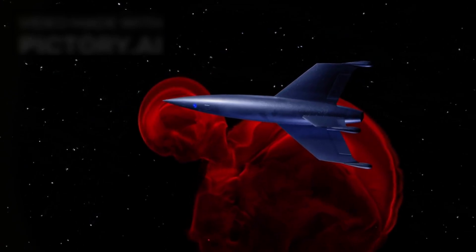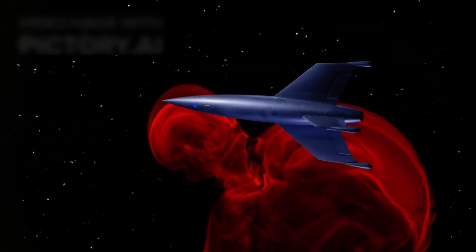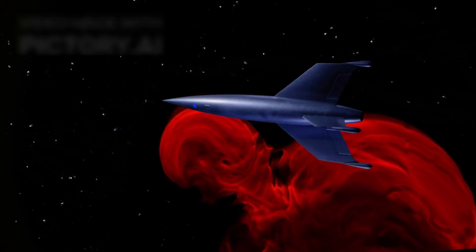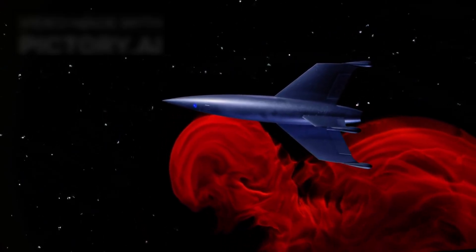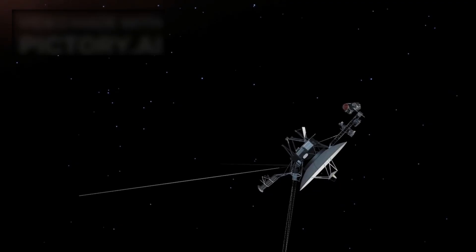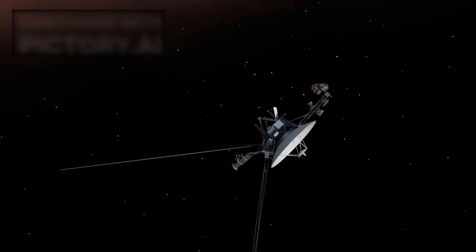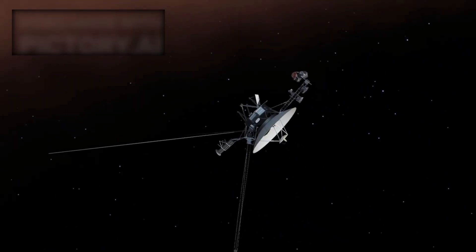On September 5, 1977, NASA launched Voyager 1, a spacecraft that would go on to redefine the very limits of exploration. At first, it was only one half of a daring twin mission, paired with Voyager 2, tasked with studying the outer planets of our solar system.